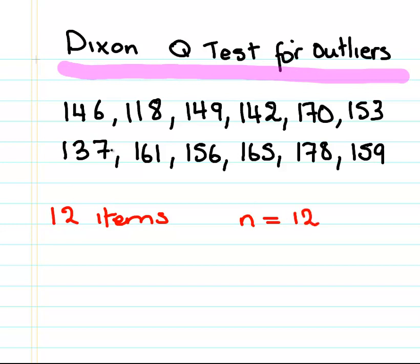And we want to see if there's any outliers here. So what I'm going to do is just go through the data and see what the minimum value is and the maximum value is. So that seems to be the minimum, and 178 seems to be the maximum.